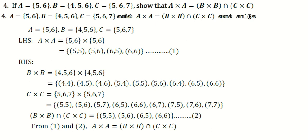This is question 1.1, fourth. Given A = {5,6}, B = {4,5,6}, C = {5,6,7}, show that A×A = (B×B) ∩ (C×C).